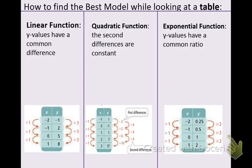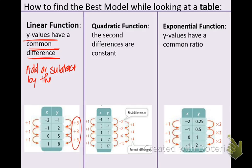First of all, linear function. You know that it's a linear function if the y values have a common difference. Take a look at the chart that's given and take a look at the y values. They are going up by three each time. So I want you to write this down. Add or subtract by the same number, and that is for the y values. If you see that happening in your table you know that you have a linear function.